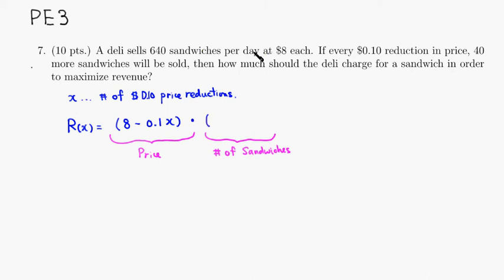Then we multiply by the number of sandwiches. We can sell 640 sandwiches at $8, so with the reduction we have 640. And the additional sandwiches we can sell would be, for each reduction, you can sell 40 more. So it's going to be 640 plus 40 times X more sandwiches will be sold. This is the revenue function, and of course we want to maximize this.